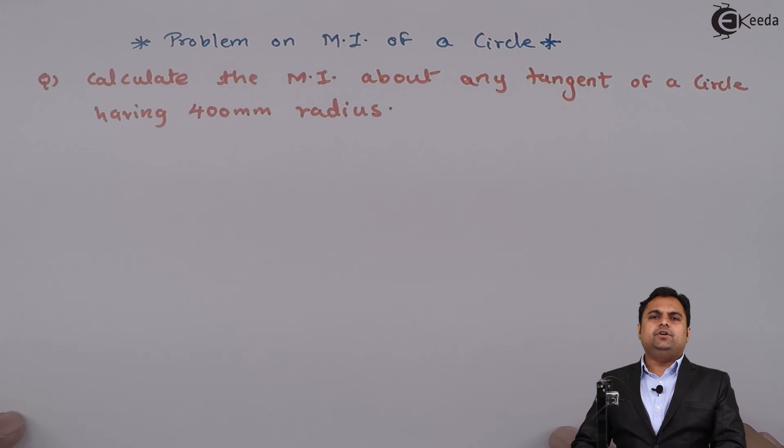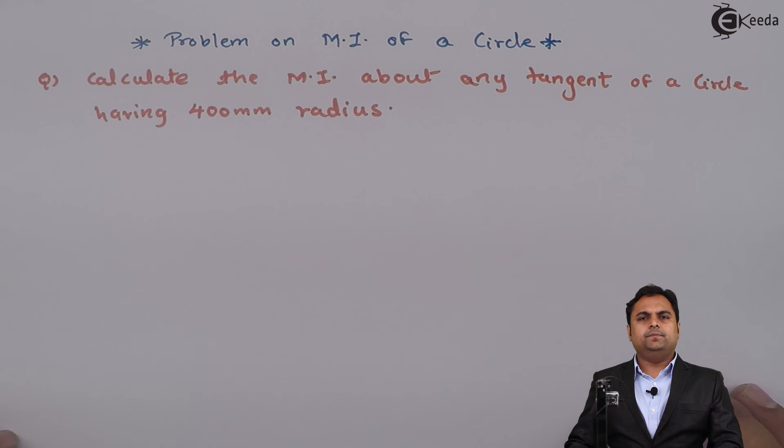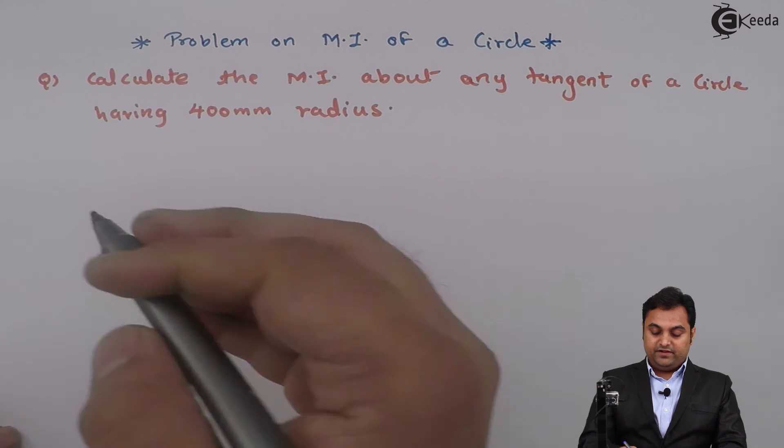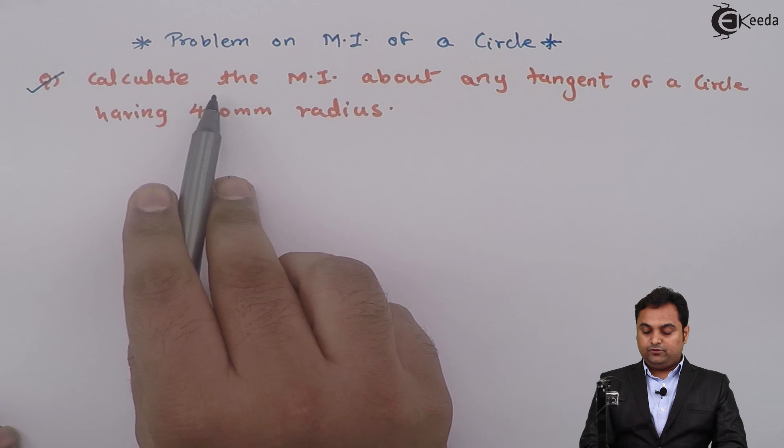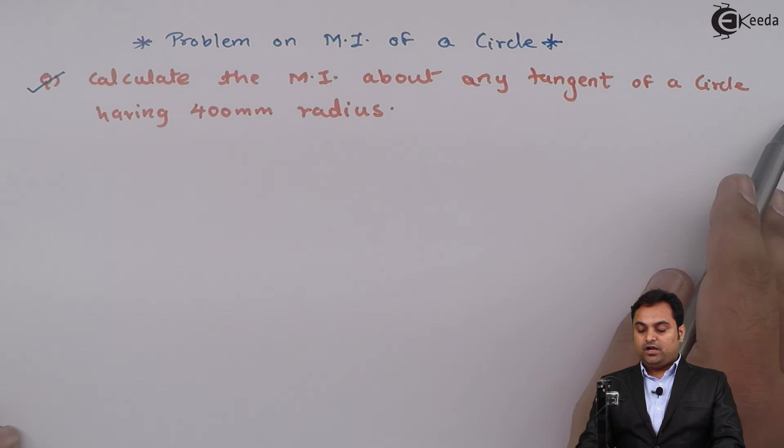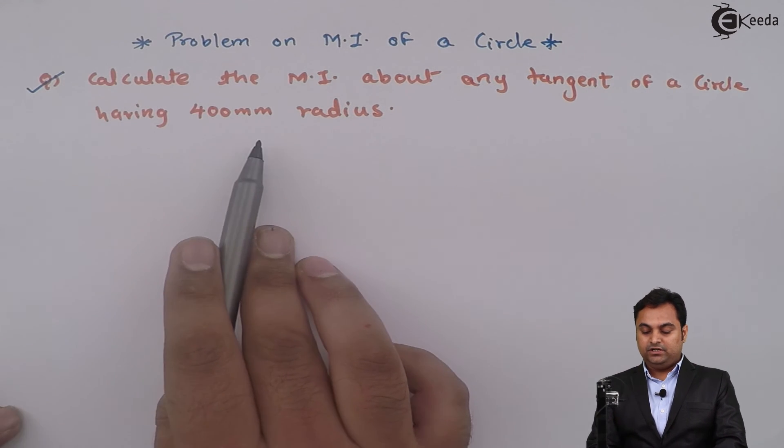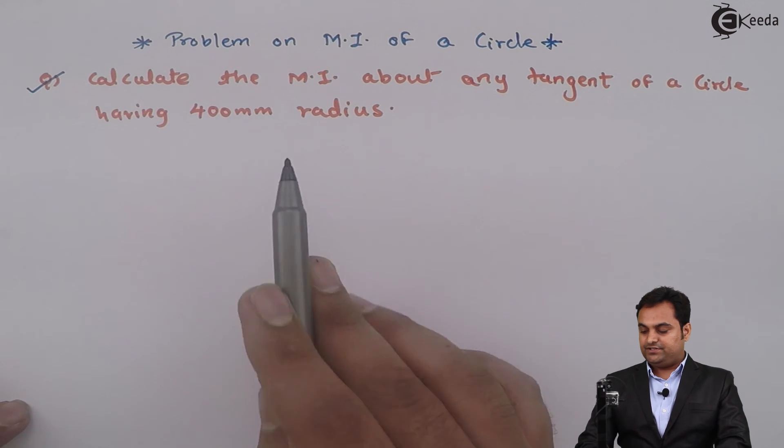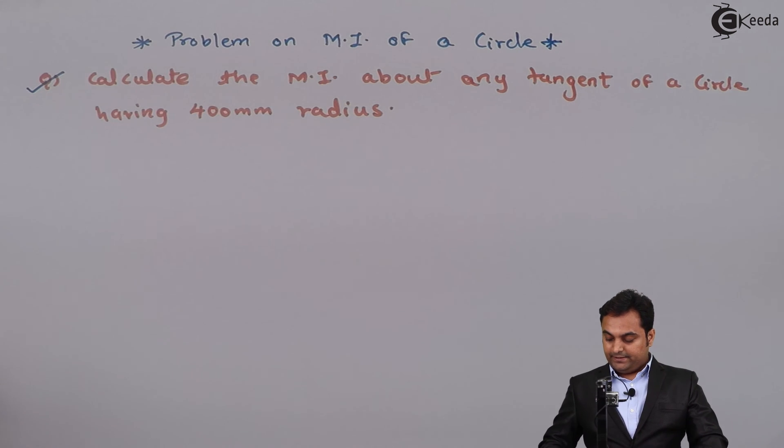Hello friends, here in this video we will see a problem on moment of inertia of a circle. For that, here we have a question: calculate the MI about any tangent, that is moment of inertia about any tangent of a circle having 400 mm radius. So I'll draw the diagram.